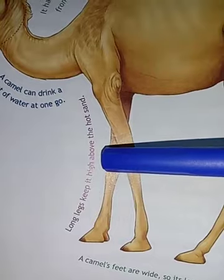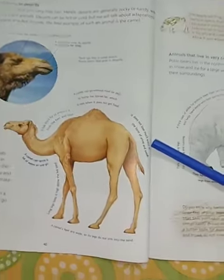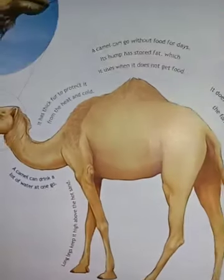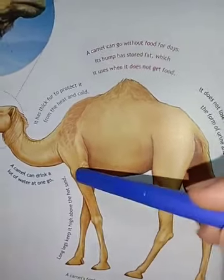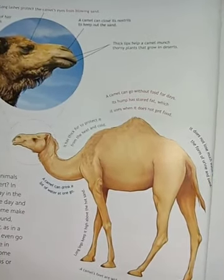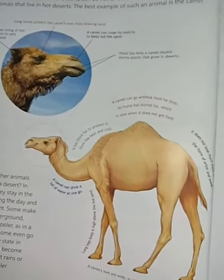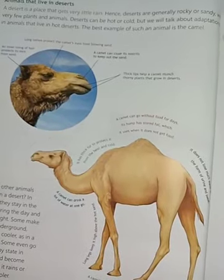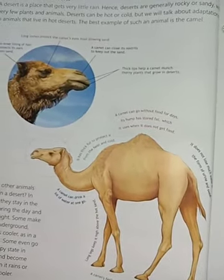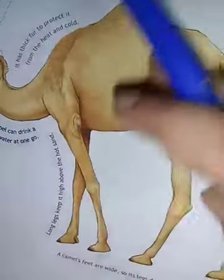Long legs keep the camel high above the hot sand. Because they have long legs, they can easily walk on sand. If you try to walk on sand your legs sink in and it becomes very difficult. But camels can easily walk on sand — they have long legs so they remain above the hot sand.